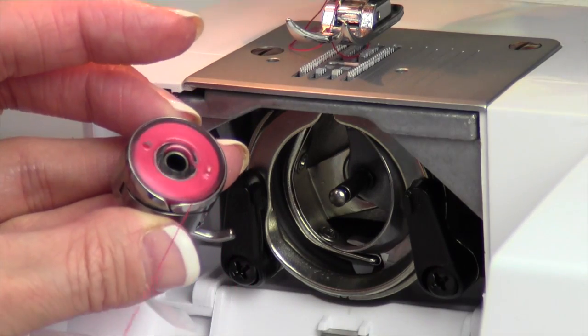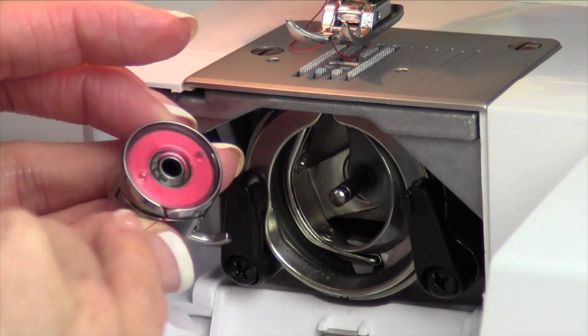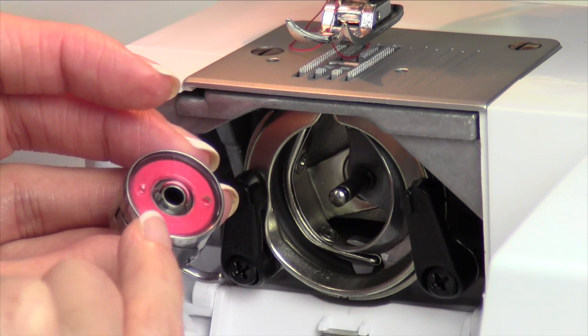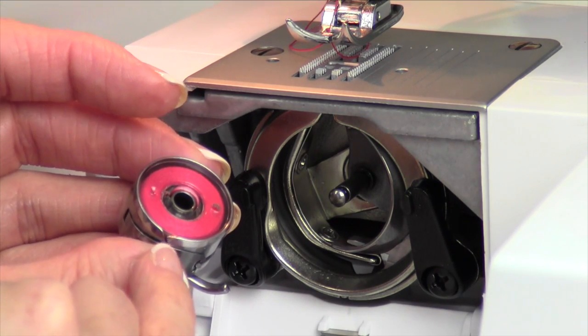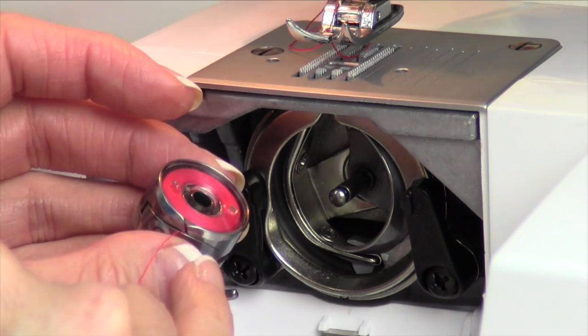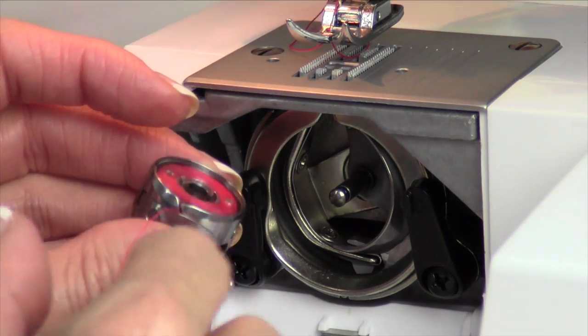When you put your bobbin in, you need to make sure that that bobbin spins clockwise, plus this does need to be a bobbin that is specific for this machine. There's no mixing and matching from other machines unless you've double checked with your store that you bought it from, that they are similar in bobbin, so these are very specific.